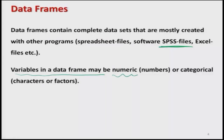Finally, keep in mind that variables in a data frame may be numeric — taking numbers as observations — or they can be categorical variables, which contain observations in the form of characters or factors. So you can see that data frame is a very general setup because it can combine different types of information on different types of variables, and then we can play with the data.